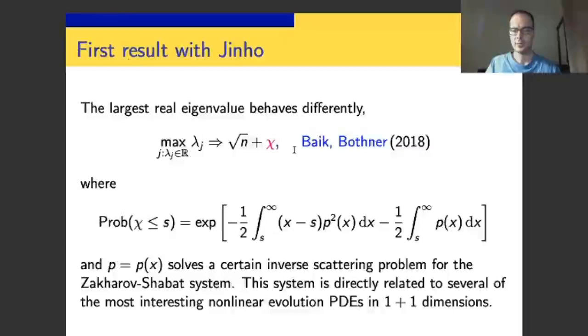Previous work also by Brian Rider, Chris Sinclair, Oleg Zaboronsky, Roger Tribe, and Michael Pękawowski identified certain operator determinant formulas for the distribution function of χ. Our starting point were those formulas, and now we identified the integrable system behind them, so we dramatically simplified those formulas. Out came this very compact expression. And this expression justifies the title of my talk, because Ginibre meets Schrödinger in this equation.